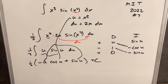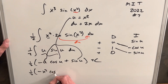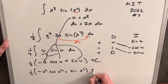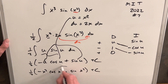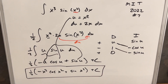Now we substitute back all our u's for x squared. So our final answer is one half times the quantity minus x squared cosine x squared plus sine x squared, plus C. And we're done — that's the solution for MIT integration bee 2022, problem number 7.